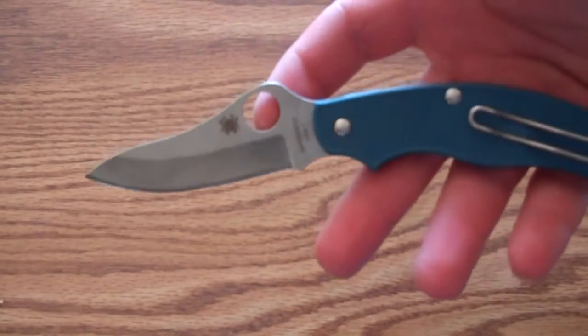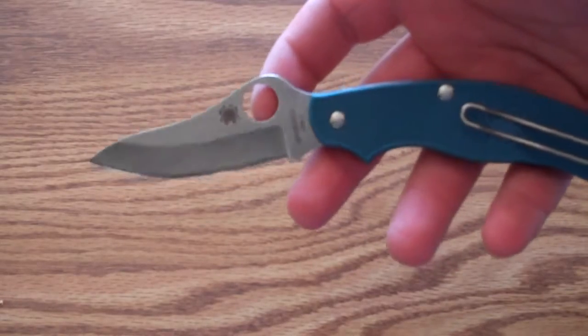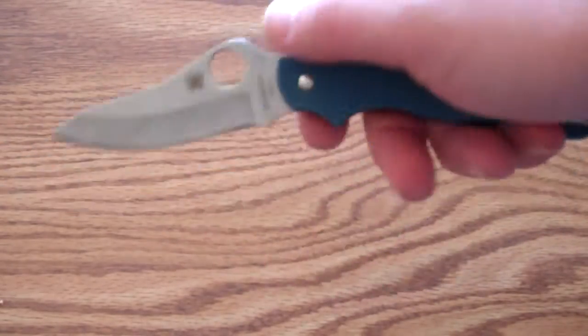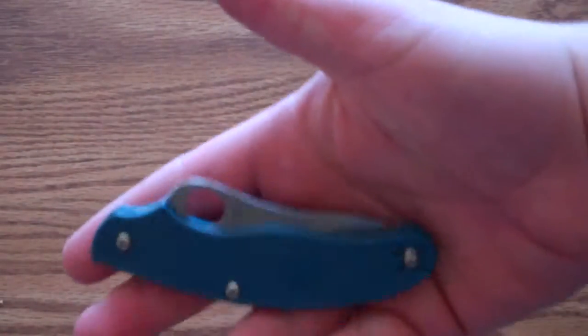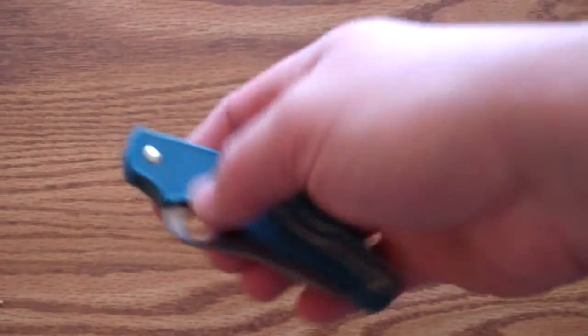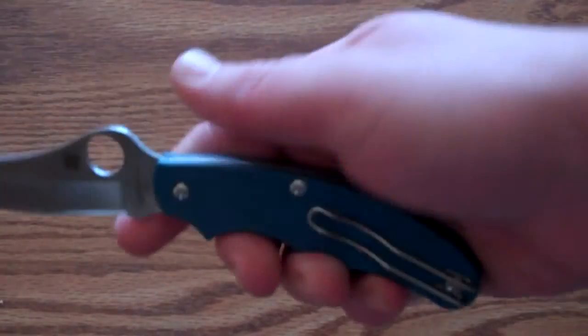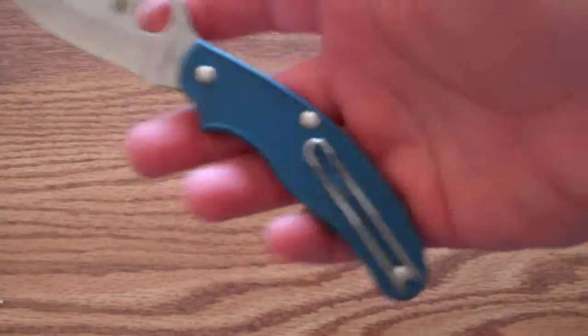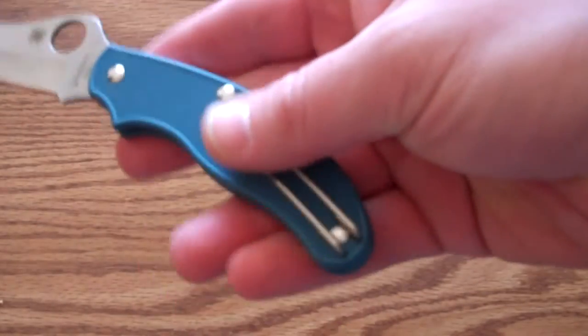Anyways, it's a modified drop point slash sheep's foot blade shape, so it's also UK certified since it is from its namesake, UK PK, so UK Pen Knife. It's a great little knife, it has a wire pocket clip here.